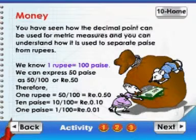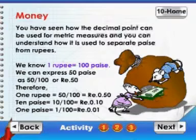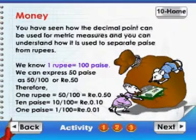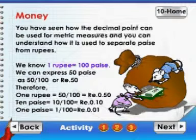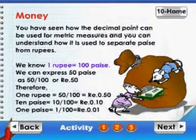Ten paisae is ten by hundred or rupee point one zero. One paisae is one by hundred or rupee point zero one.